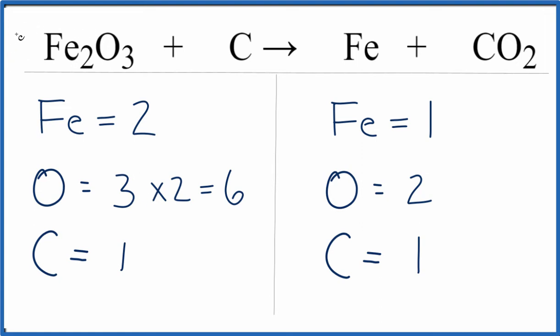So I need to multiply two here towards the whole thing. So I have my oxygen, that's the three times the two here, that gives us the six, and this two applies to the iron as well. So two times two, that'll give me four iron atoms.